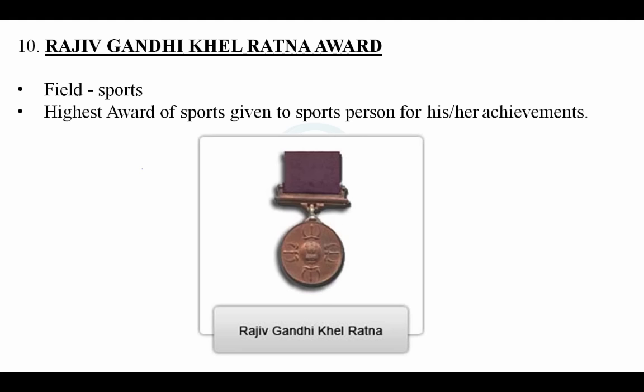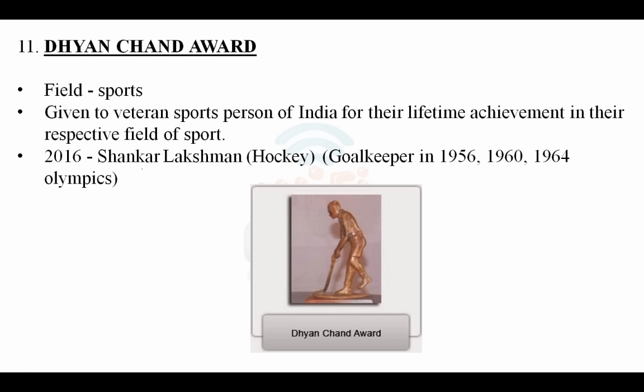The Rajiv Gandhi Khel Ratna is the highest sports award given to a sports person for exceptional achievement. The Dhyan Chand Award is given to veteran sports persons for lifetime achievement in their respective sport. The 2016 recipient was Shankar Laxman, a goalkeeper in the 1956 and 1964 Olympics who helped India win gold medals — he received this award for Hockey.